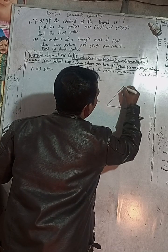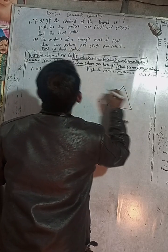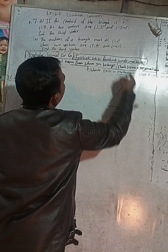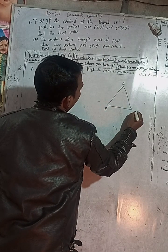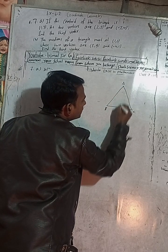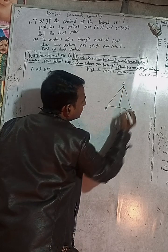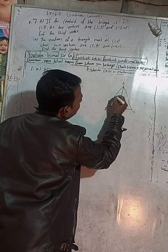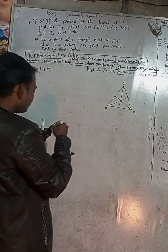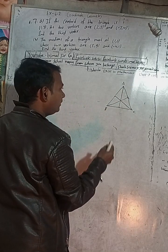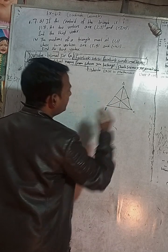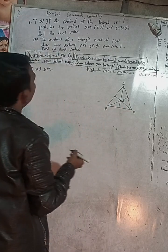This is a triangle. If I name the vertices A, B, and C — the median means the line drawn from a vertex to the middle of the opposite side. The median from A goes to the midpoint of BC, the median from B goes to the midpoint of AC, and so on. When all the medians of the triangle intersect, that intersecting point is called G, the centroid.